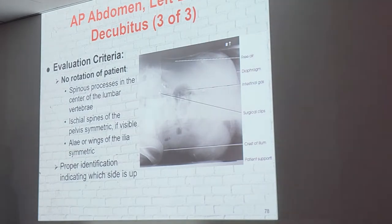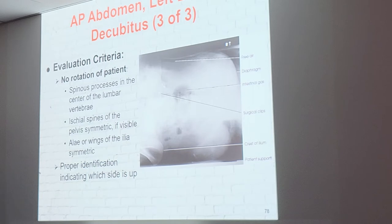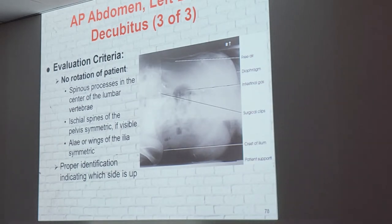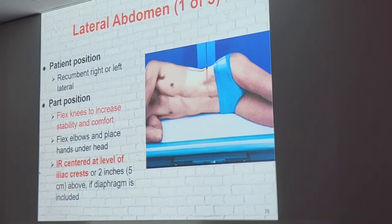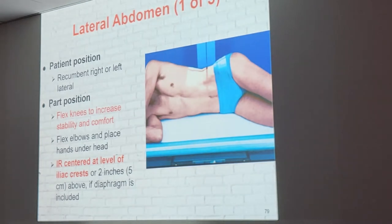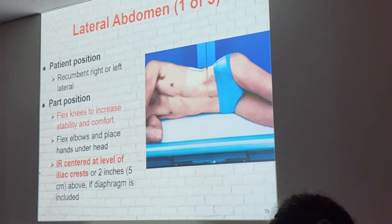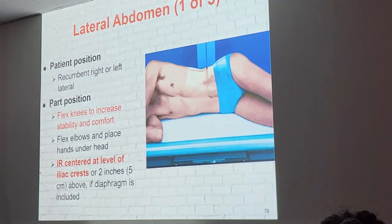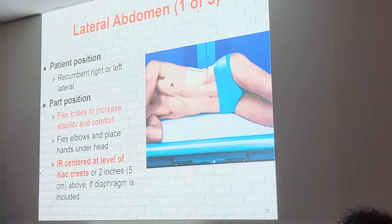Some radiologists — particularly residents — don't always know why the image is sideways. I've had them ask why it's sideways. The arrow marker removes all ambiguity. Always include the arrow to indicate the decubitus position clearly for the radiologist.